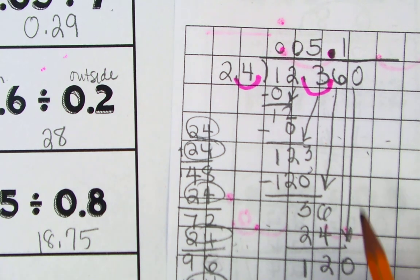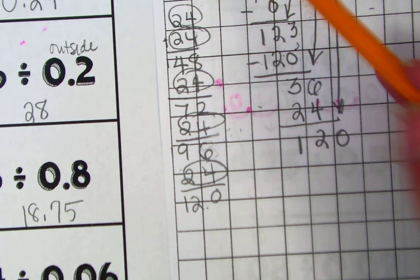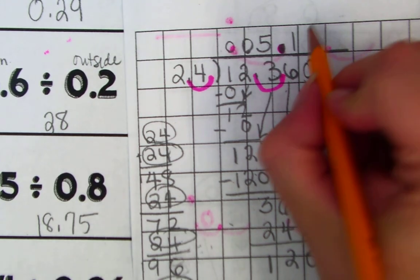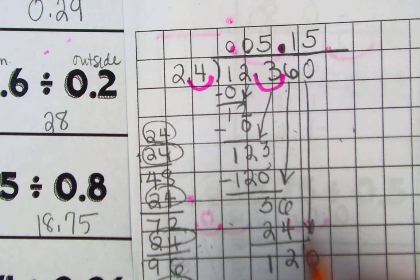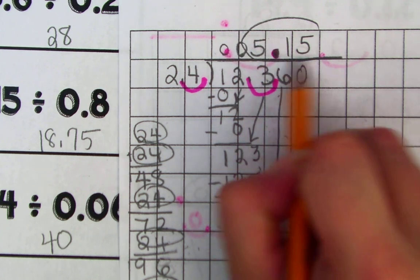Okay. Oh, I see 120. And I see that I had 120 over here. So I'm going to count up to 120. 1, 2, 3, 4, 5. It goes in 5 times. 24 times 5, I said it was 120. When I subtract, I get 0. Therefore, my answer is 5.15.